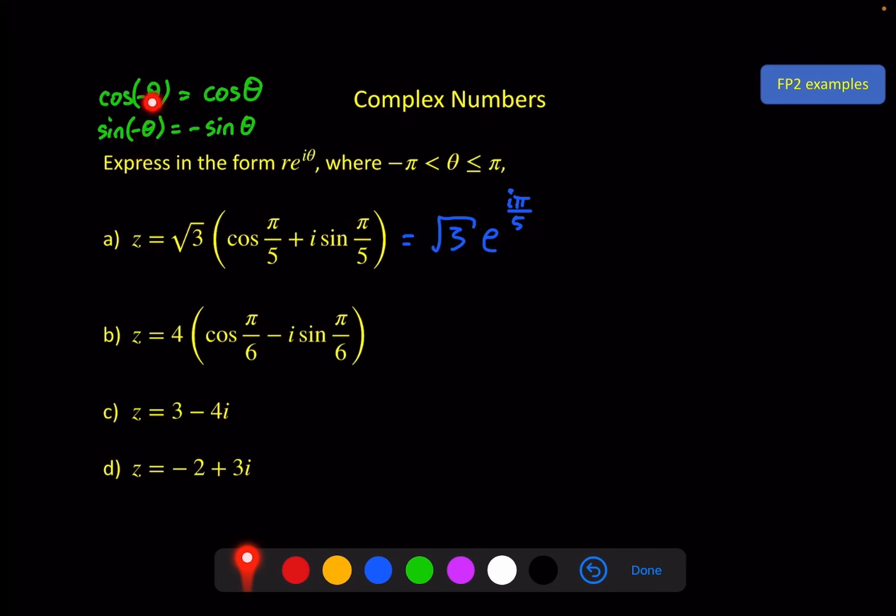Which means we can rewrite this as 4 cosine minus π by 6. And we do that just to keep the arguments the same because we need to do it in order to satisfy the plus in Euler's relation.